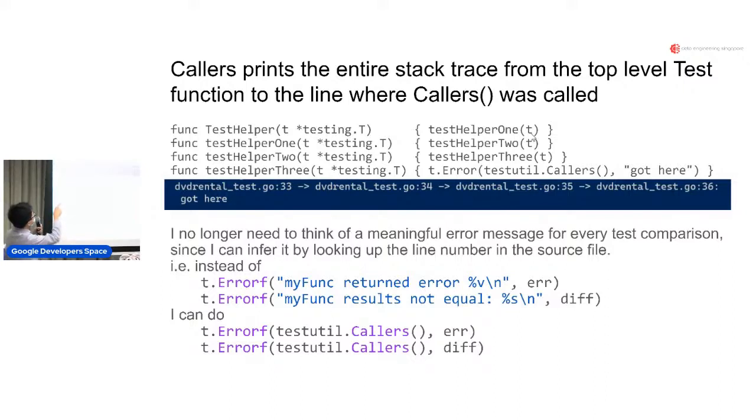So what callers does is it prints the entire trace from the top level test function where it was called, all the way down to where callers was called. If you have something like test helper, it calls test helper one, test helper one calls test helper two - don't do this, but yeah - test helper three calls this, and then it finally got testutil.Callers. So you get 33, 34, 35, 36, and then finally got here.